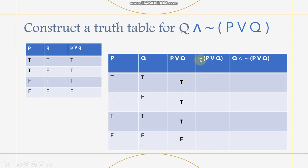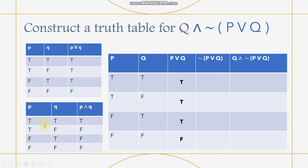We then apply the negation to ¬(P∨Q), which simply reverses the values. Then, since we now have the value of ¬(P∨Q), we compute Q∧¬(P∨Q) by looking at the Q column and the ¬(P∨Q) column. The results come out as: false, false, false, and false.